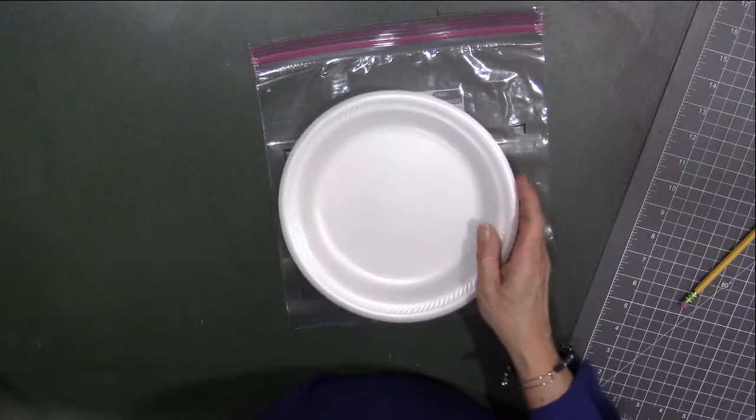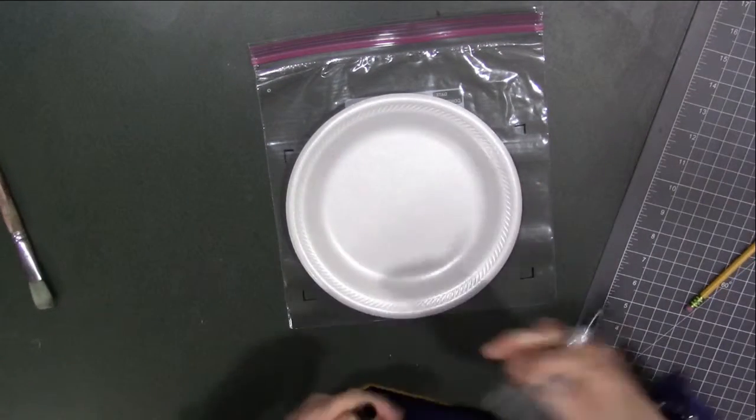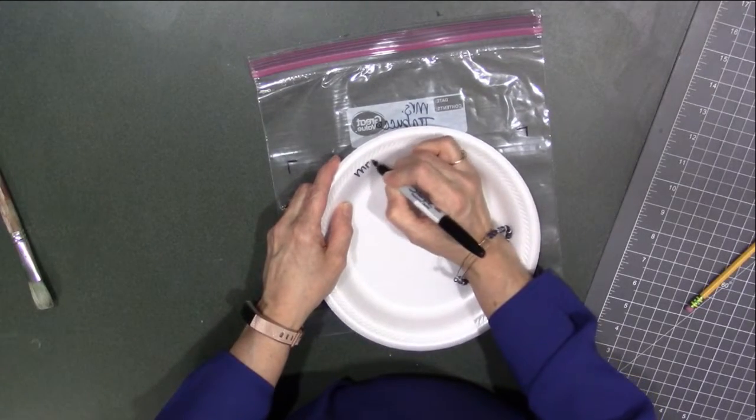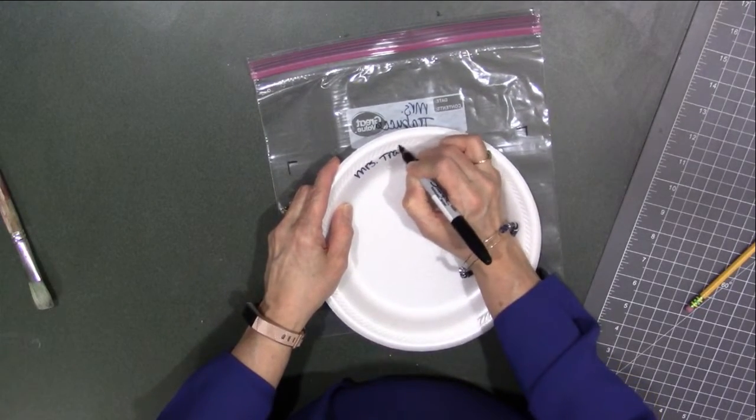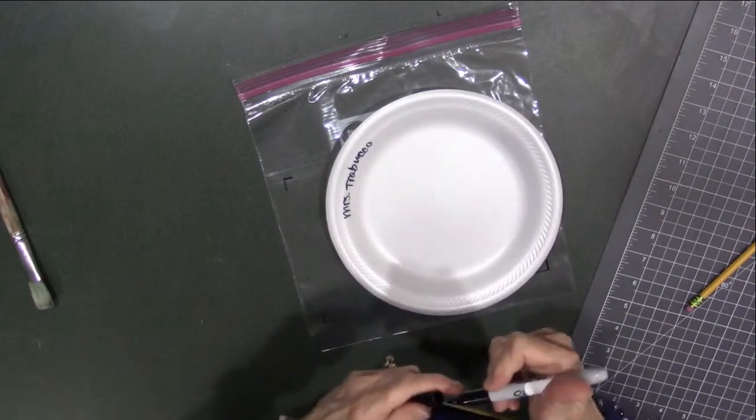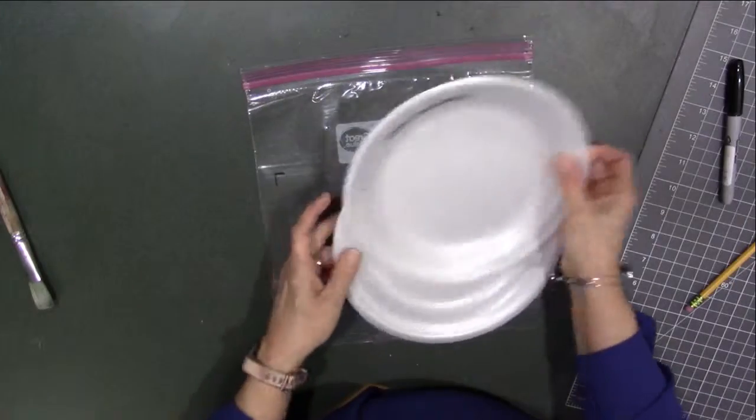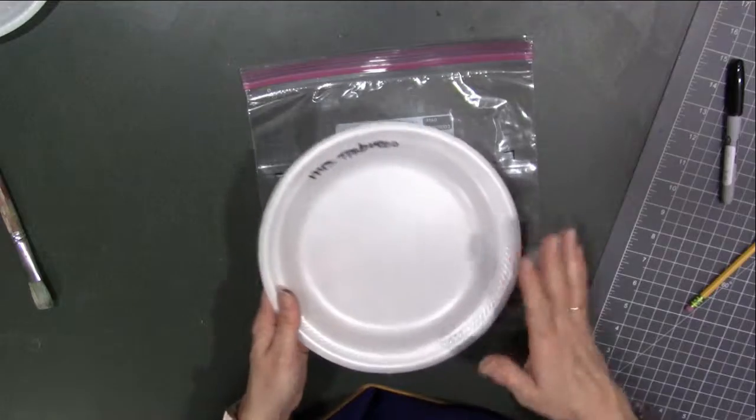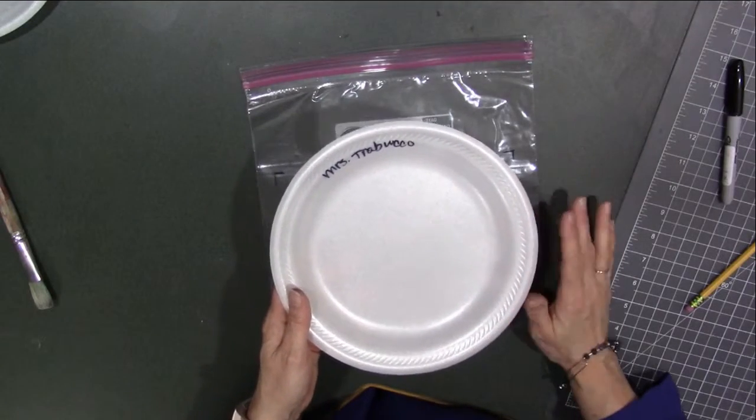You're going to use a styrofoam plate as your palette. And what you want to do is make sure on the rim so that it doesn't go in your paint, add your name. And this is just going to hold your paint during class, small amounts of whatever colors you're using while you're printing.